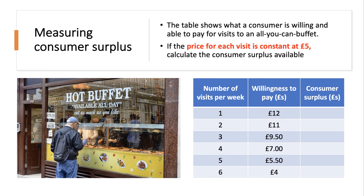There is some consumer surplus for each visit: seven pounds for the first visit, six for the second, and so on, all the way down to the fifth visit where the price they're willing to pay — five pounds fifty — is just above the price they pay of five pounds. For the sixth visit, the price they're willing to pay of four pounds is less than the price charged, giving negative consumer surplus.